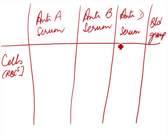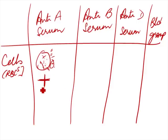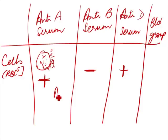They see if there is a reaction or agglutination — where the cells stick to each other. For example, if they added anti-A serum and saw agglutination, added anti-B serum and saw no agglutination, and added anti-D serum and saw agglutination, this means you have antigen A, you don't have antigen B, and you do have antigen D. So your blood group would be A positive.